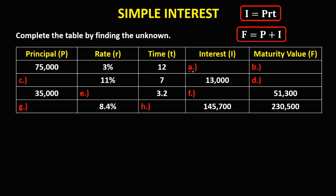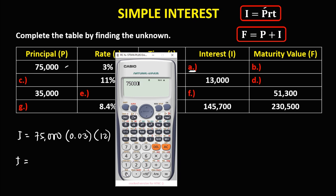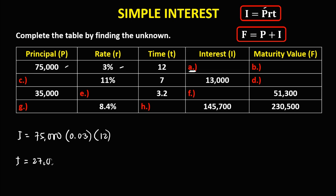To solve for A, since interest is the unknown, the formula for interest is principal times rate times time. The principal is 75,000, the rate is 3%, which in decimal is 0.03, and the time is 12. So the interest is 75,000 times 0.03 times 12, which equals 27,000. Therefore A is equal to 27,000.